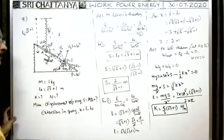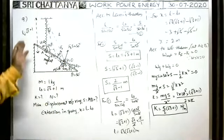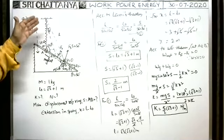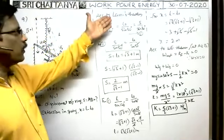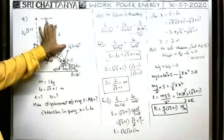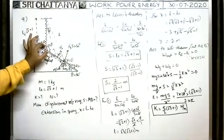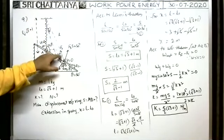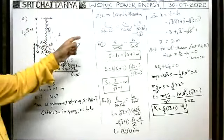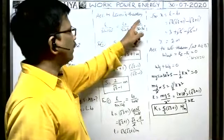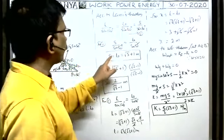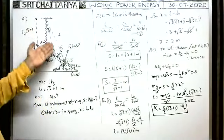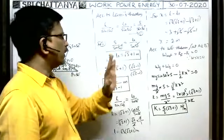We can apply Lamy's theorem. According to Lamy's theorem: L / sin(120) = L0 / sin(30) = S / sin(opposite angle). Since sin(120) and sin(30) satisfy the condition, the displacement of the ring S is equal to L0. L0 is given as root 3 plus 1 meters. Therefore, the displacement of the ring is root 3 plus 1 meters.